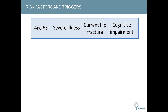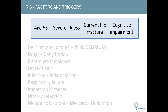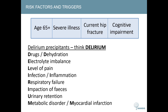Delirium has four main risk factors: being age 65 or over, having a severe illness, having a current hip fracture, and having cognitive impairment. If cognitive impairment exists in a patient, this should be confirmed using a standardized and validated cognitive impairment measure. Delirium has several triggers; however, these can be memorized using the mnemonic DELIRIUM.